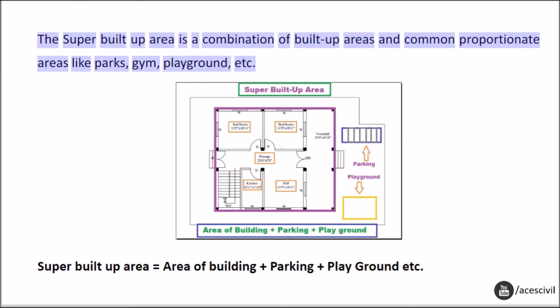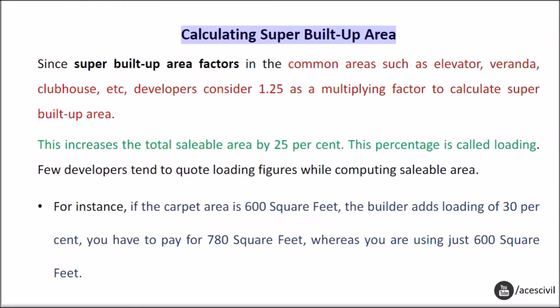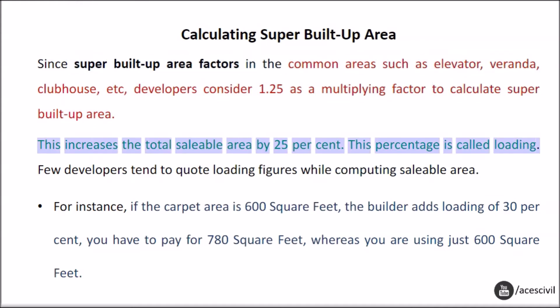The super built-up area is a combination of built-up areas and common proportionate areas like parks, gym, playground, etc. Super built-up area equals area of building plus parking plus playground, etc. Since super built-up area factors in common areas such as elevator, veranda, clubhouse, etc., developers consider 1.25 as a multiplying factor to calculate super built-up area. This increases the total saleable area by 25%. This percentage is called loading.